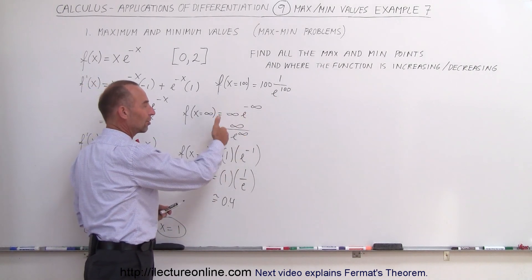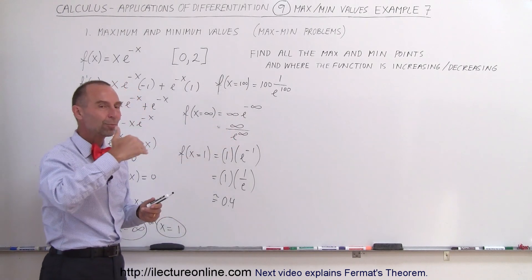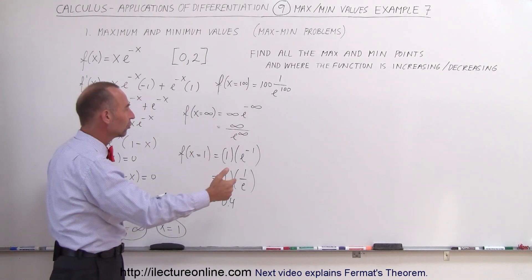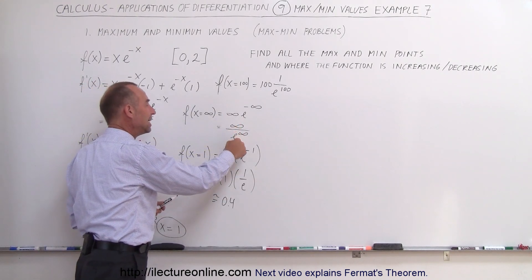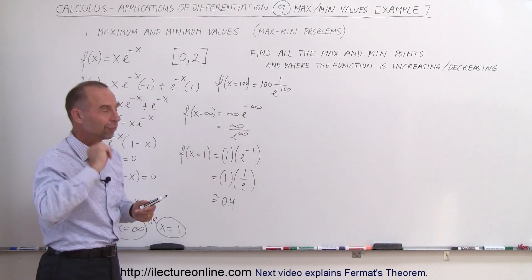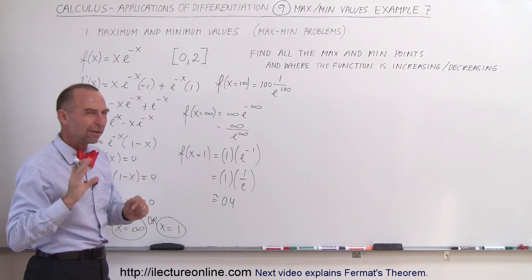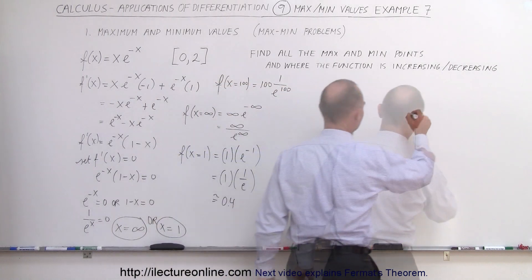That's hard to see when you get a situation like this, but as you approach larger and larger numbers, a very large number divided by e to a very large number is virtually 0. Now we have a better idea what this function looks like. Let's graph it.